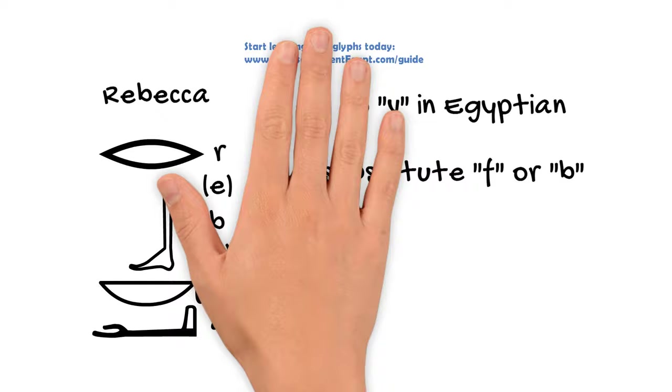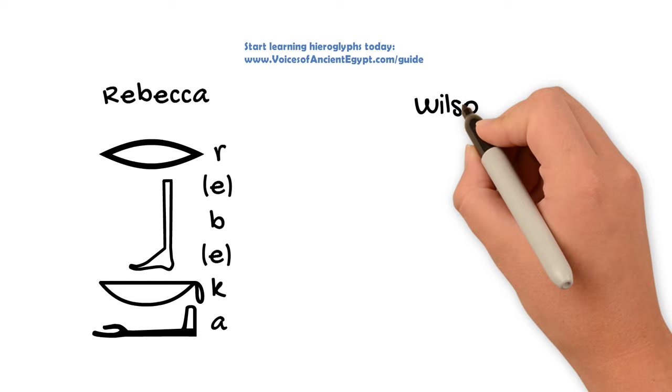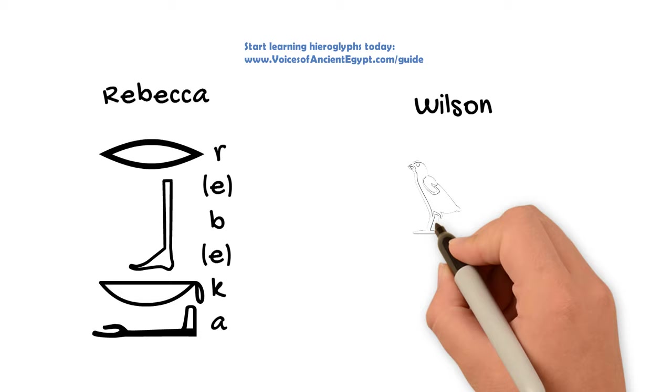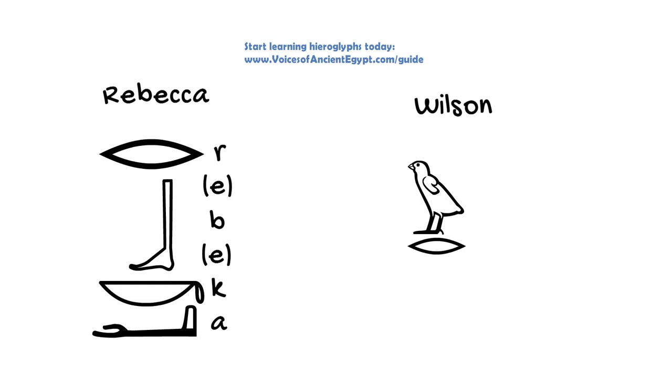Let's look at one last Western name example. So if we wanted to write the name Wilson, for example, as one would have done through probably most of Egyptian history if they had to render this name, I would do it like this. A quail chick for W, the mouth, which is an R of course, substituting for the L that doesn't exist in Egyptian, a folded cloth for S, and a water for N. And I just wouldn't put anything in for the equivalent of the vowels, since we don't have any weak consonant sounds here.